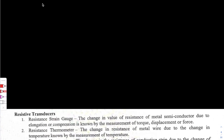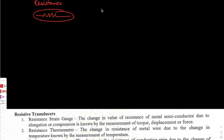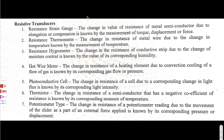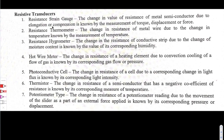Coming on to resistive transducers: these are transducers which use resistance as a component to change the signal energy to an electrical signal. Some types include the resistance strain gauge transducer.